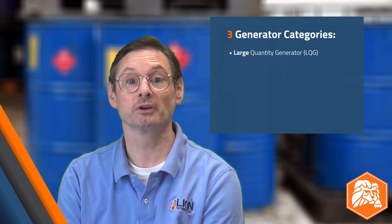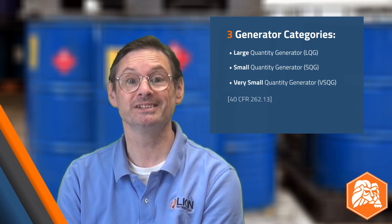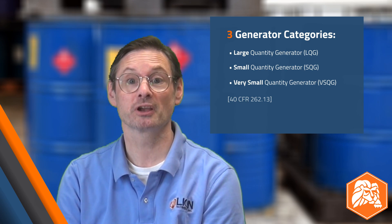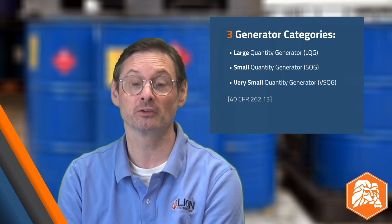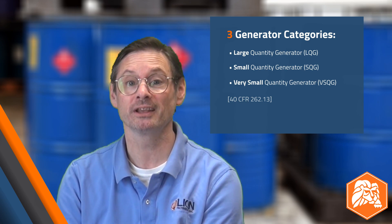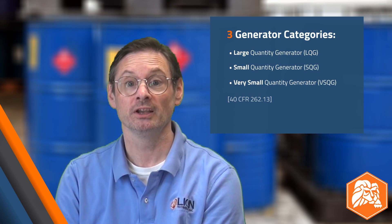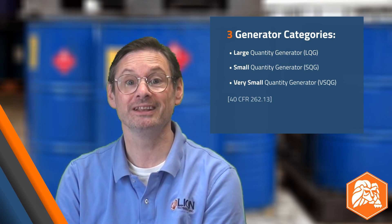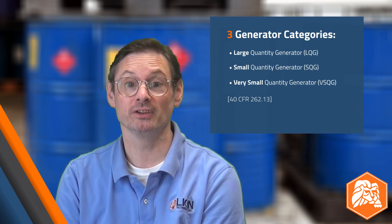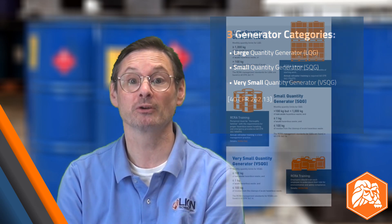The federal RCRA regulations divide generators into three size categories: large quantity generators, small quantity generators, and very small quantity generators. Each site's generator category is based on the amount of hazardous waste generated in any one calendar month during the year. If you're interested in the specifics about each of these three categories, you can find them laid out clearly in the free cheat sheet linked in the description for this video.